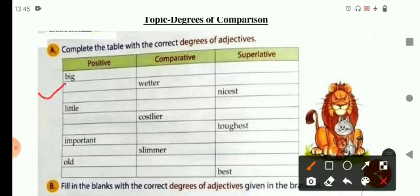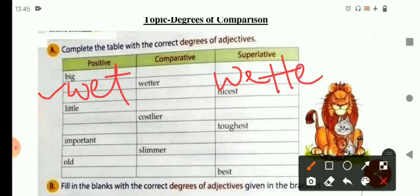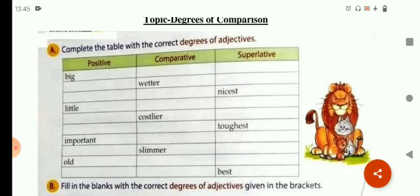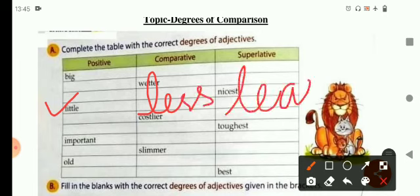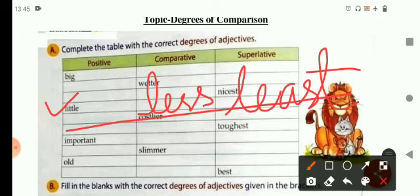But in second column, the comparative degree is given to you and you have to write the positive degree and superlative degree for the word wetter. So the positive degree for wetter will be wet, wetter and wettest. Then, the next word is little. Positive degree of little is given. Now you have to write the comparative and superlative degree for it. Little, less and least. So this is the superlative and comparative degree of little.